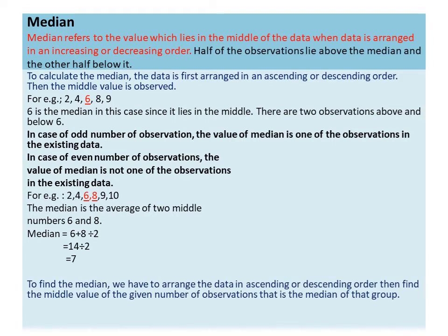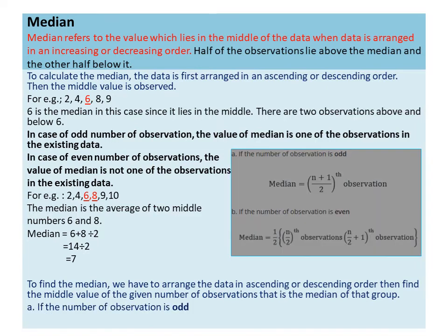To find the median, we arrange the given data in ascending or descending order, then find the middle value. If the number of observations is odd, the middle observation is the (n + 1) ÷ 2 th observation. For example, if there are 25 observations, the median is the (25 + 1) ÷ 2 = 13th observation.